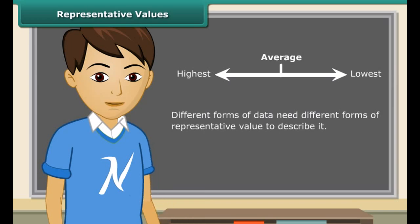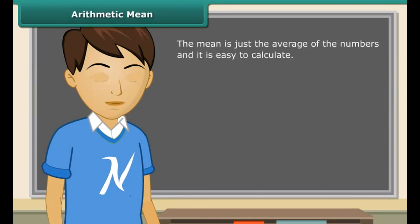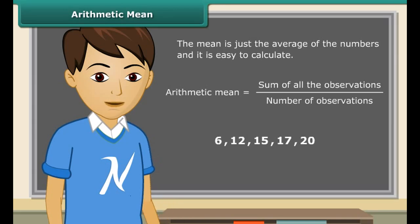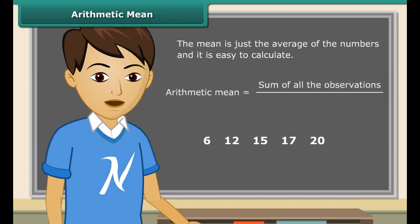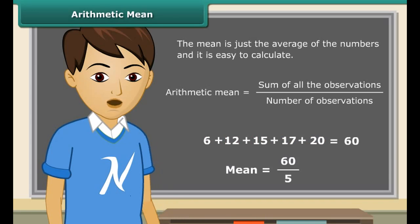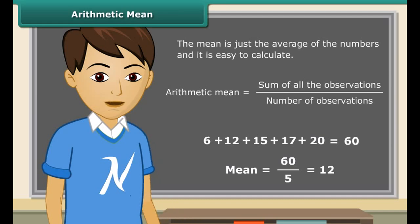Different forms of data need different forms of representative value to describe it. One of these representative values is the arithmetic mean. The mean is just the average of the numbers and it is easy to calculate. Mean is equal to the sum of all the observations divided by the number of observations. For example, the sum of these numbers is 60 and there are 5 numbers, so the mean equals 60 divided by 5, which equals 12.